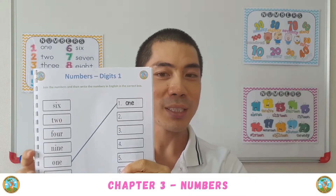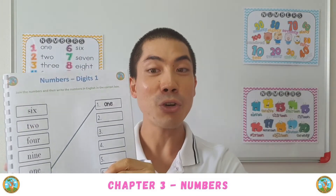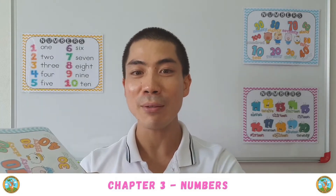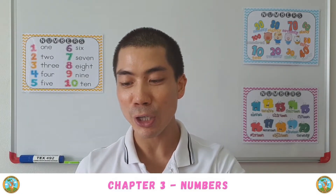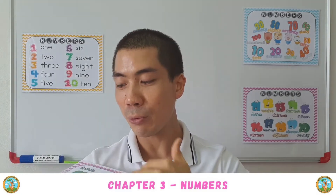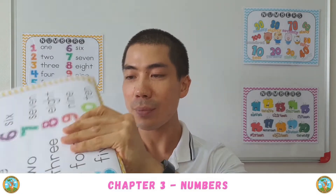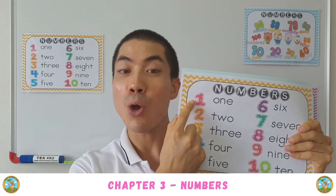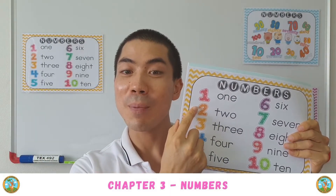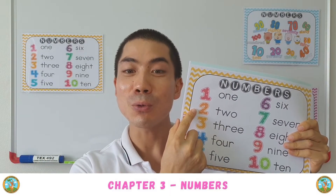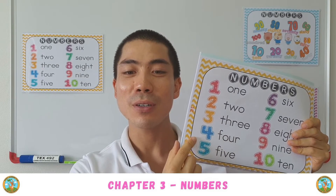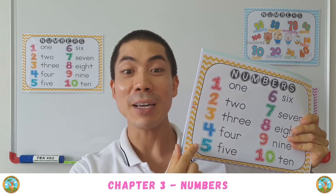So before we do this, let's try to read the numbers together again one more time just to refresh our memory. So reading together: this is 1, 2, 3, 4, 5.